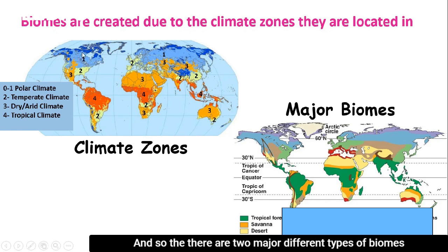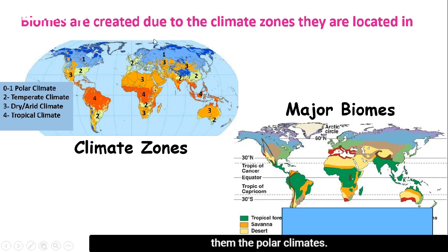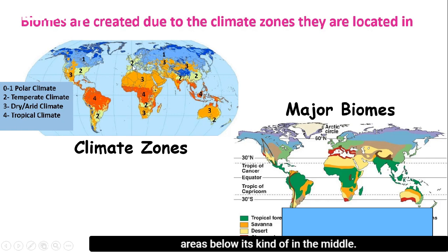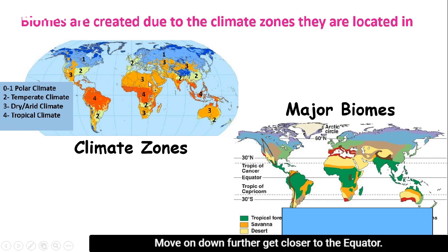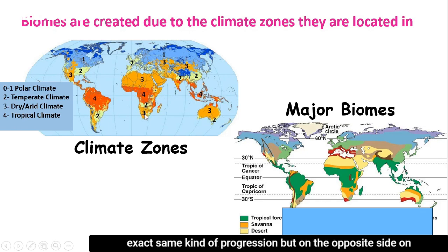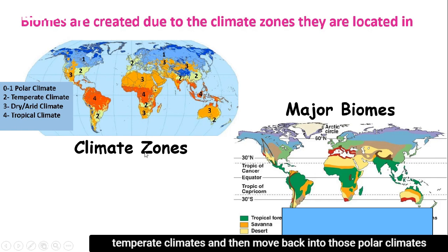There are two major types of biomes in the polar climates. Moving down, you enter temperate climates — not as cold as areas above or as warm as areas below. Moving further down toward the equator, you get to drier, arid climates. Right at the equator, you have tropical climates. Then the same progression repeats on the opposite hemisphere — back into temperate and then polar climates — with different biomes created within each zone.